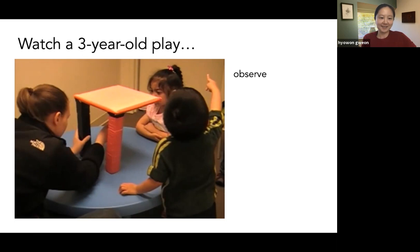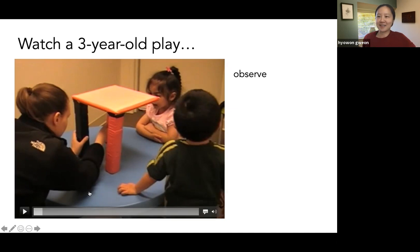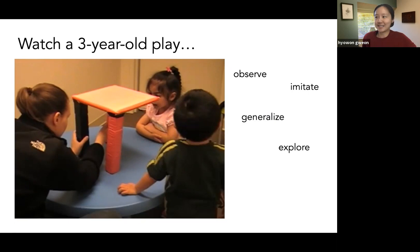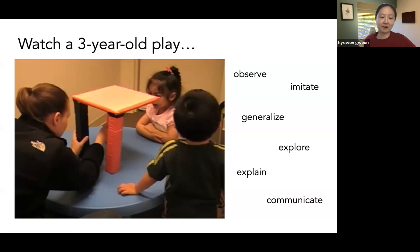So what you've seen in just about a minute — she does a bunch of things. She observes other people's actions. She does imitate and tries the same thing, but she also generalizes what she's seen to other blocks. It turns out none of them stick, so she explores all the other blocks to see if anything sticks. She tries to explain what's going on and wonders whether the sticking mechanism isn't there. She communicates her thoughts as she's exploring, and she even optimizes — deciding she's not going to do it anymore and is going to build a tower with her brother's help. So let's zoom out a little bit.